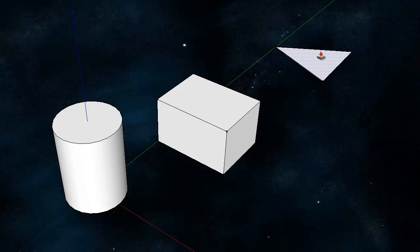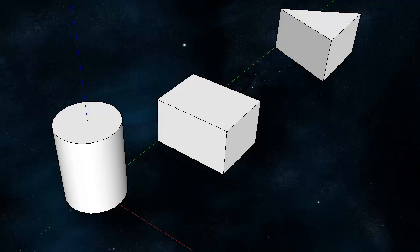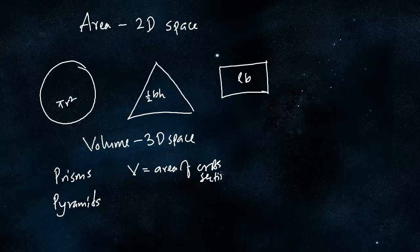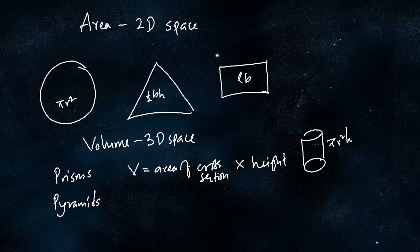In the case of a triangle, it could be any shape that can be brought into a prism. The general formula for the volume of a prism is: volume equals area of cross section times height. For a cylinder, that would be pi r squared h.